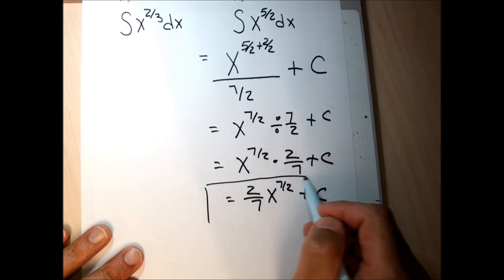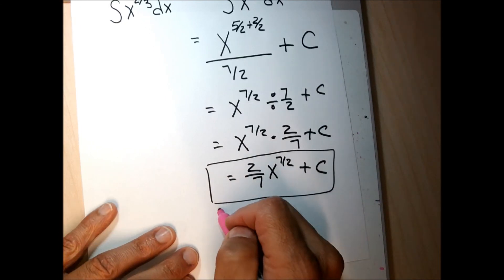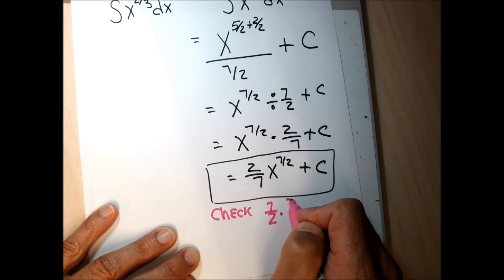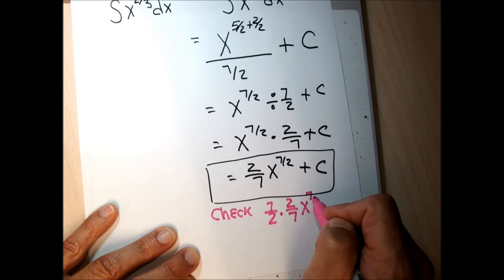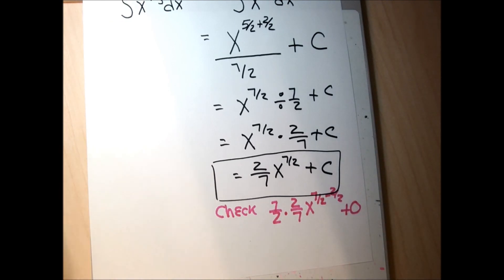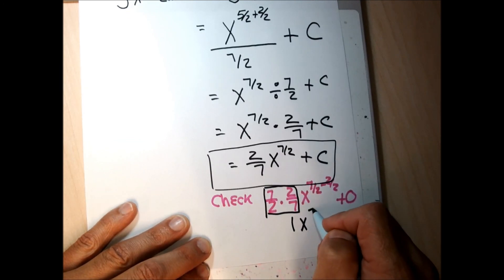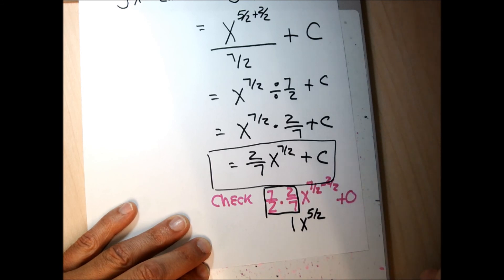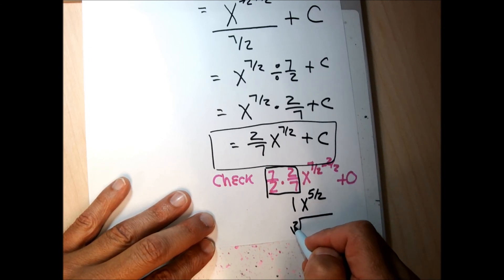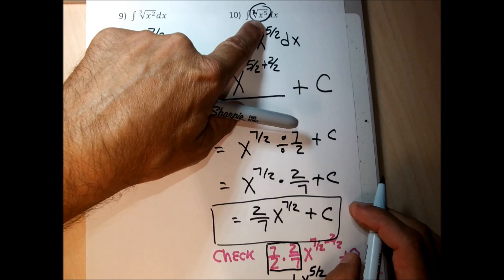To check, I take the derivative using the general power rule: 7/2 times 2/7 (the reciprocals multiply to 1), and the exponent becomes 7/2 minus 2/2, which is 5/2. So the derivative is x to the 5/2, which can be written as the square root of x to the fifth — exactly what was between the integral symbol and the dx in the original problem.